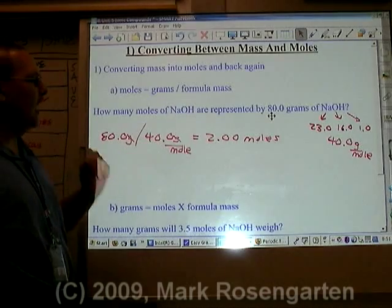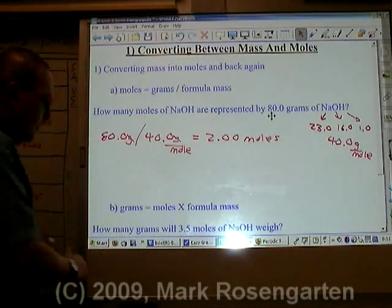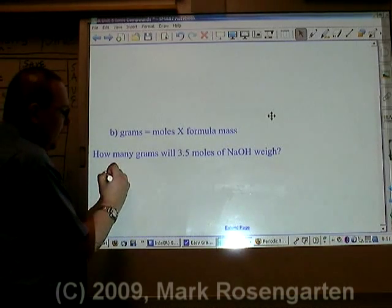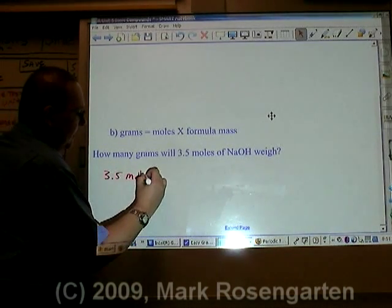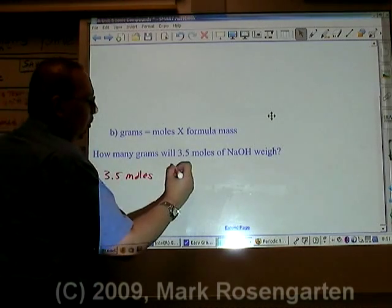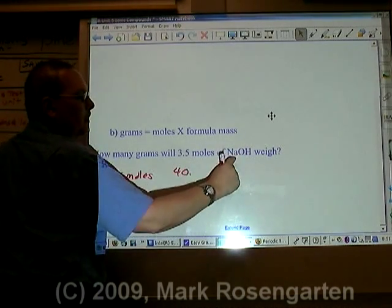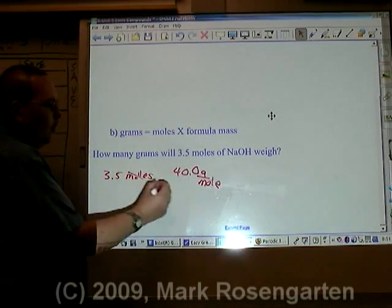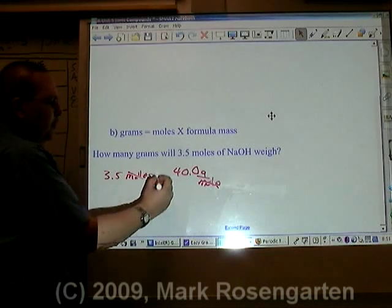On the other hand, if you're given moles and you want to get to grams, we've got 3.5 moles, and we have 40.0, because we're still dealing with sodium hydroxide, grams per mole. How do we cancel out moles and be left with grams? Multiply.